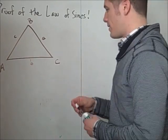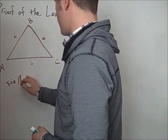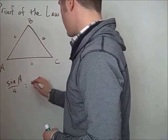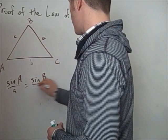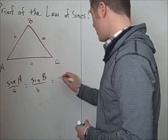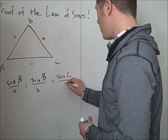The law of sines says that the sine of angle A over a equals the sine of B over b equals the sine of C over c.